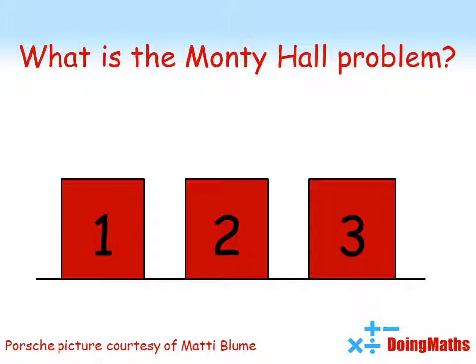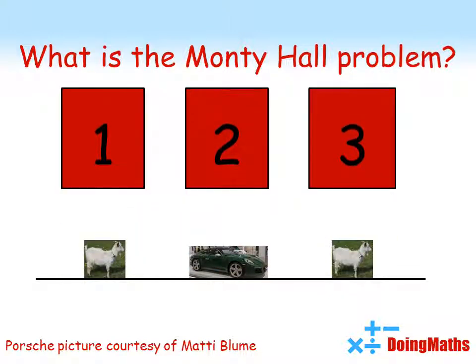You are given the choice of three doors. Behind one of the doors is a new car, and behind the other two are goats. You win whatever is behind the door you choose.